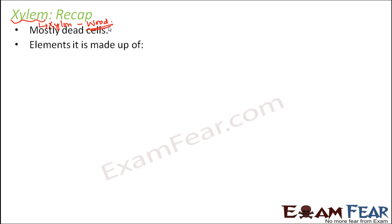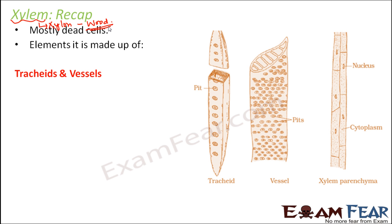Xylem cells are mostly dead. They are made up of several elements, most of which are again dead. The elements include tracheids and vessels — tube-like structures which help in conducting water from one place to another. Tracheids are cylindrical with tapering ends, while vessels are wider. Both have small pore-like structures on their surface called pits, through which they communicate with each other.